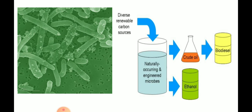Some microbes can act as naturally occurring and engineered microbes. These microbes can be engineered — their DNA can be changed for more efficient decomposition of substances. From this decomposed substance, ethanol can be obtained, and ethanol is added to crude oil so we can use it as biodiesel.